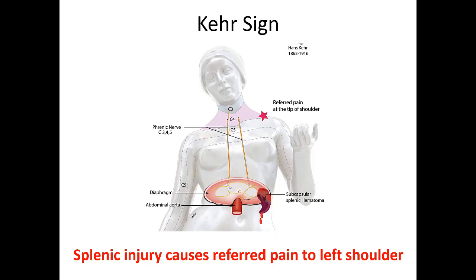Another sign to recognize is Kehr's sign. When the spleen is injured, the innervation of the spleen actually comes from high up in the cervical vertebrae, and sometimes splenic injury can refer pain to the left shoulder. If you have a patient complaining of left shoulder pain with a serious mechanism for abdominal injury, consider possible splenic injury.